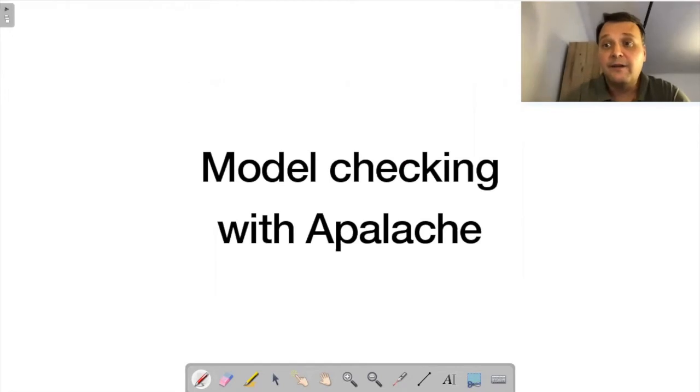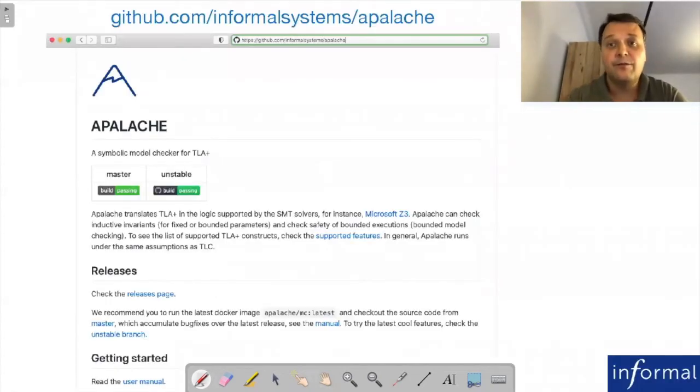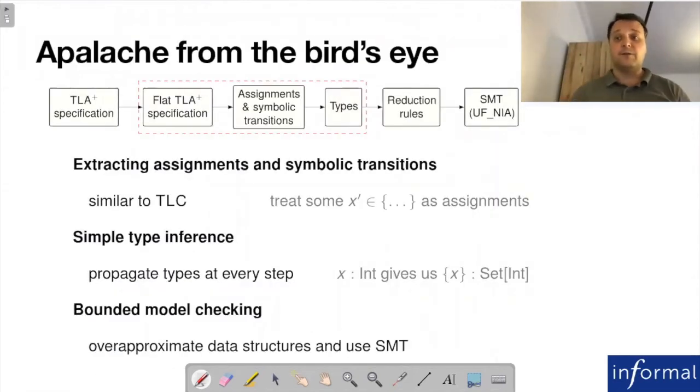Let's see how we can verify the TLA specification of the light client with our model checker, Apalache. If you haven't seen this tool before, you can go on the webpage mentioned above and read the manual. From a high-level perspective, what it does: it takes a TLA specification, unfolds all the operator definitions including recursive operators up to certain bounds, finds what we call assignments similar to what TLC does dynamically, decomposes a specification into smaller pieces that we call symbolic transitions—roughly corresponding to actions in your specification—and does some simple type checking, which will be superseded by the new type checker. Then it does a translation of a TLA specification into an SMT formula.